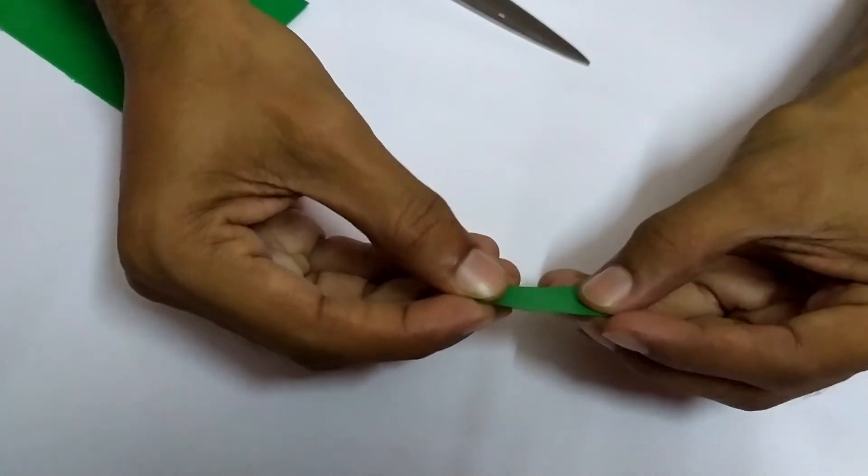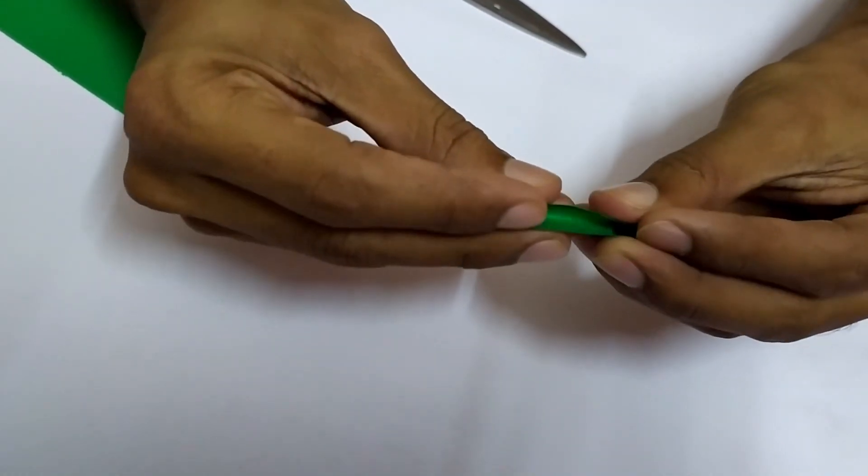Then fold it in half. Again, you fold one more half. After this, take the scissors.